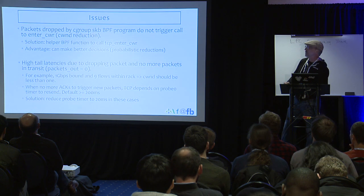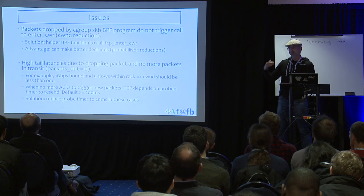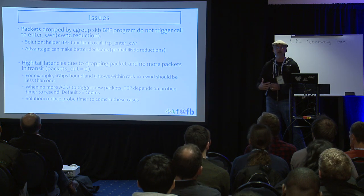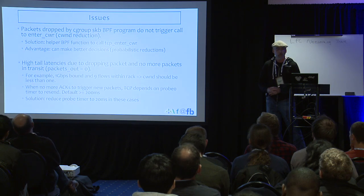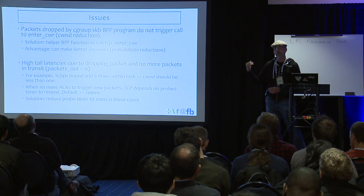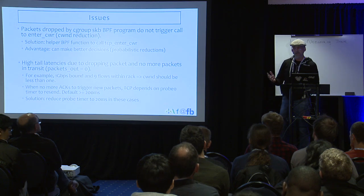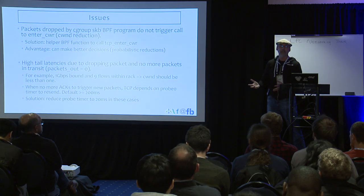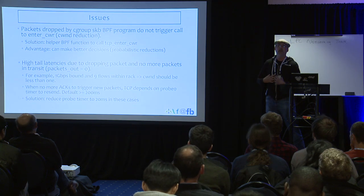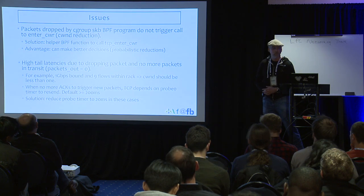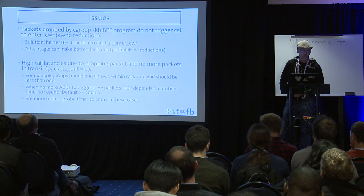We saw some initial issues. When we drop a packet in a queuing discipline in traffic control, TCP is notified that the packet was dropped and automatically calls the congestion window reduction. When a packet is dropped with the BPF cgroup egress, TCP is not notified — it doesn't know the packet was dropped. Initially I thought this was bad, but it was actually good, because it allows us to implement our own algorithm — in this case, the probabilistic marking algorithm to reduce the congestion window. So it turned out to be for the better.